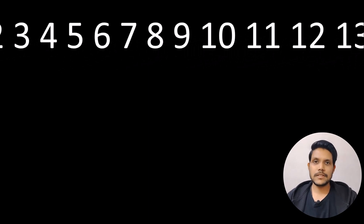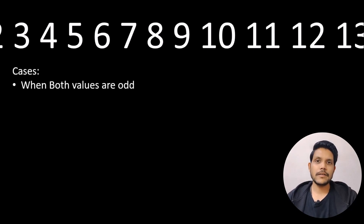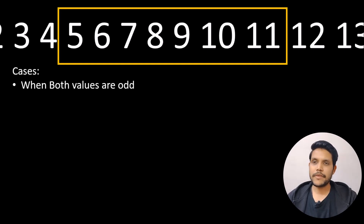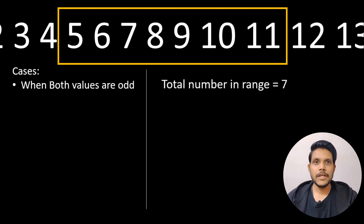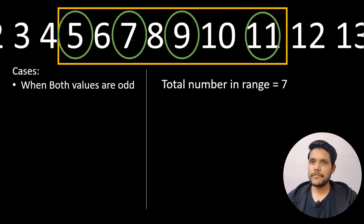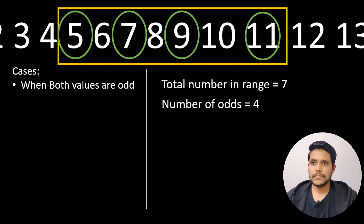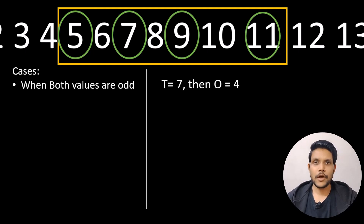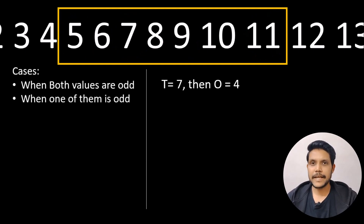In the first case we are assuming that both the values are odd. The range will start from 5 and end at 11. The total number of values in this range is 7, and when we count the number of odd values we see that the number of odd values in this range is 4.